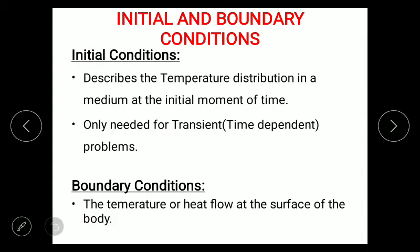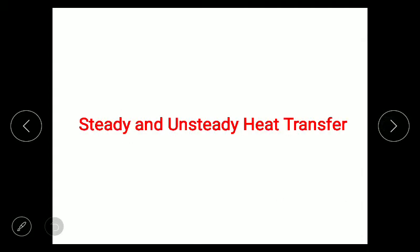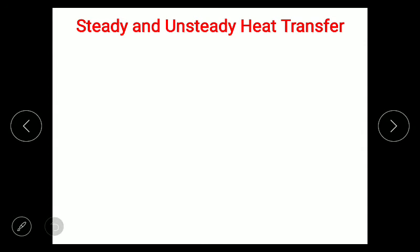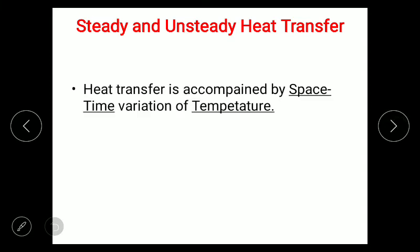To summarize, the initial conditions give us temperature details at the beginning of the heat transfer process, while boundary conditions give temperature details at the surface of the body or system. We will learn how to use initial and boundary conditions to solve differential equations in the next videos. Moving on, the next topic is steady and unsteady — or transient — heat transfer. Before going to that, the temperature flowing through a body depends on space and time variables.